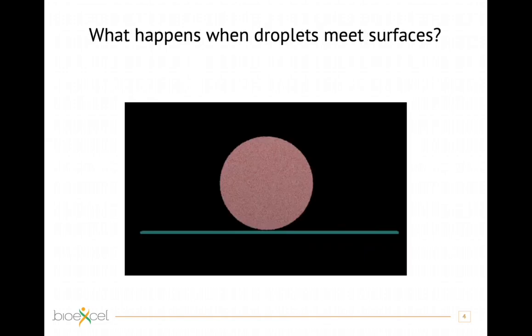Usually when we do simulation we try to simplify the system. For example, if we are interested in wetting of a surface, we may use one drop of water on a surface to see what happens when the drop of water falls. We reduce the system to a dimension that we can simulate. We can then ask what is the effect on the wetting mechanism from different types of surface — we change the surface and see how the wetting changes.